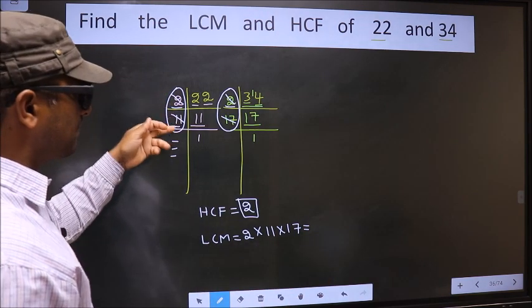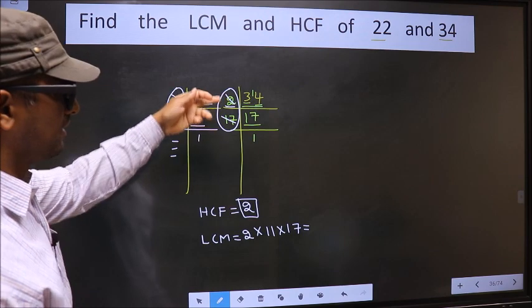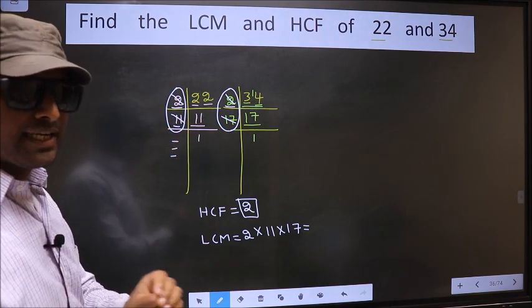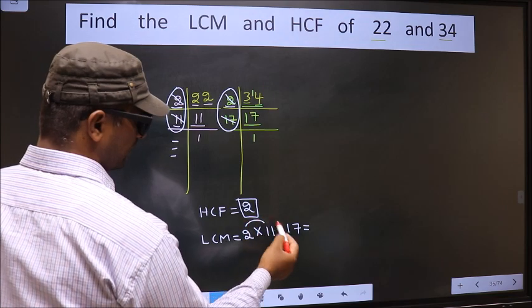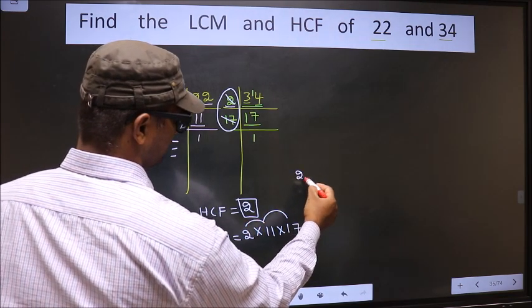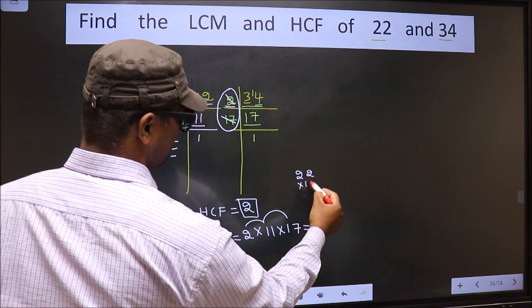Now each number has been cut. So our LCM is 2 into 11, 22 into 17, 22 into 17.